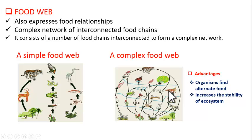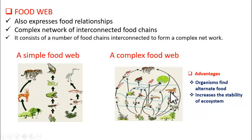In a complex food web, there are several food chains which have connections and cross links here and there. This is a complex food web.